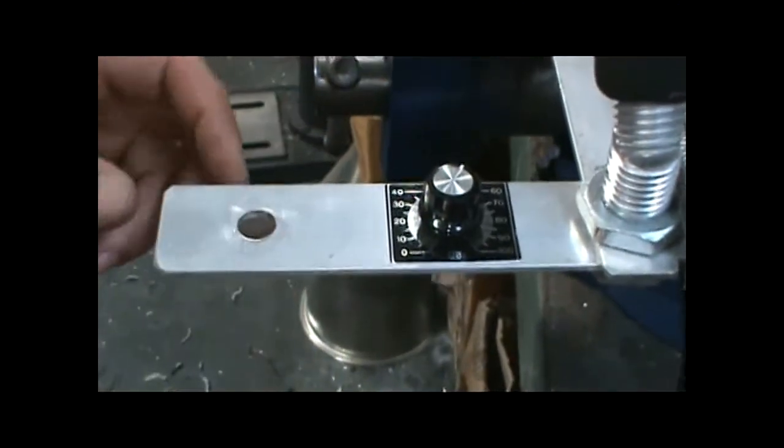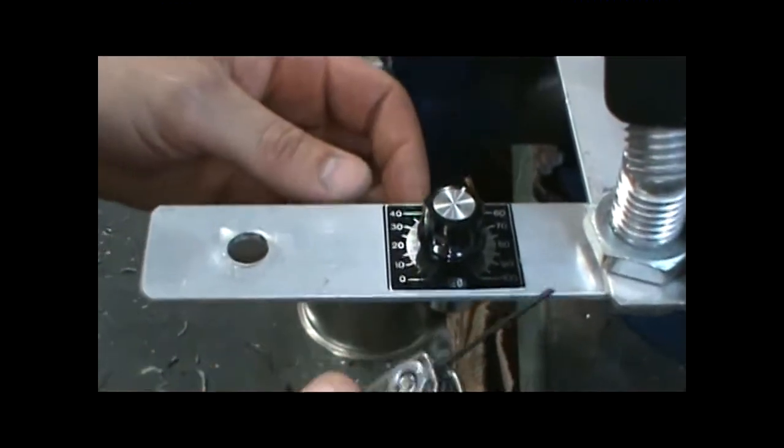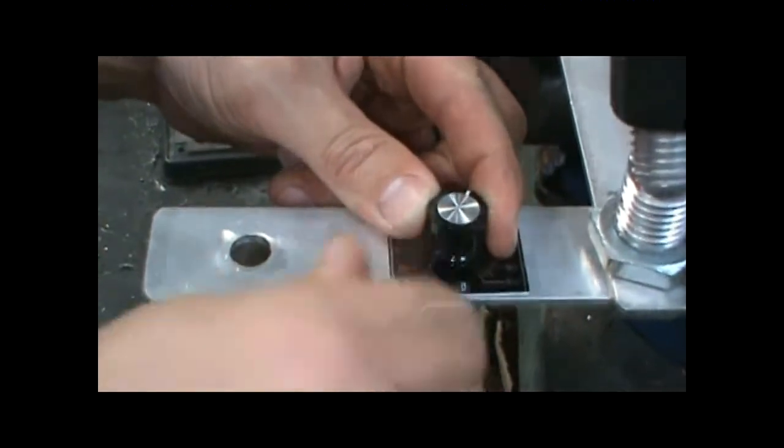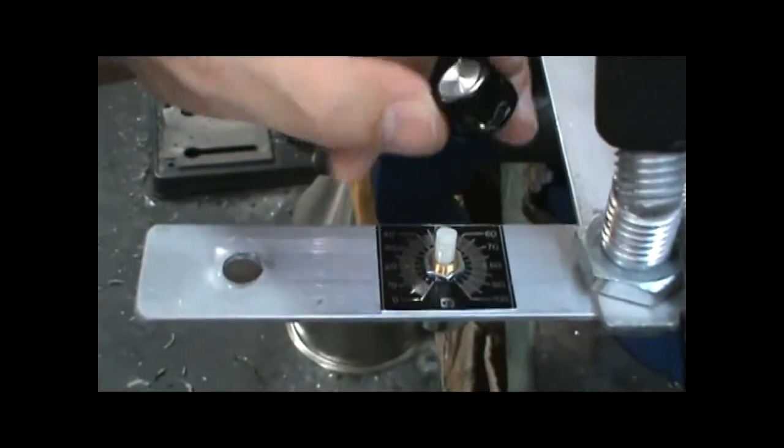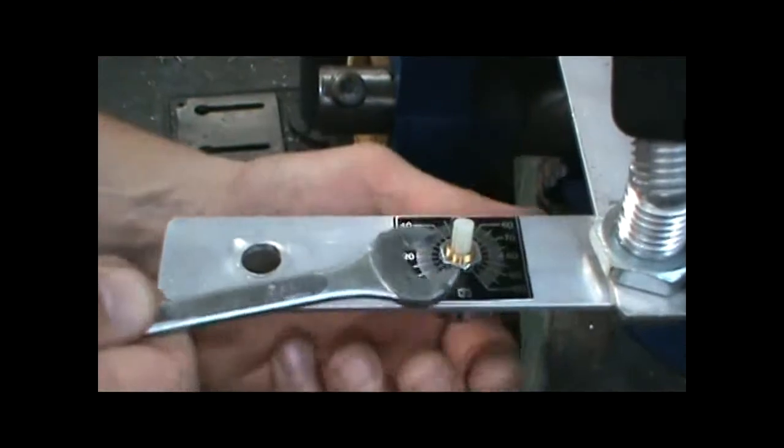Then you need a small allen key to loosen the set screw on the dial plate right here. After that's removed, you can remove the nut on the speed control right here.